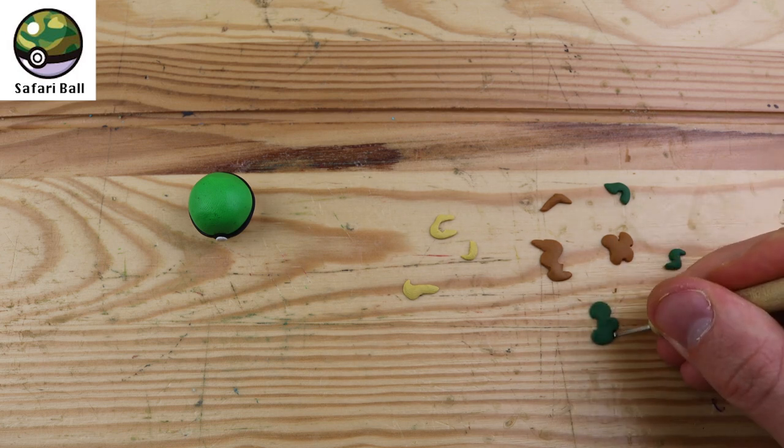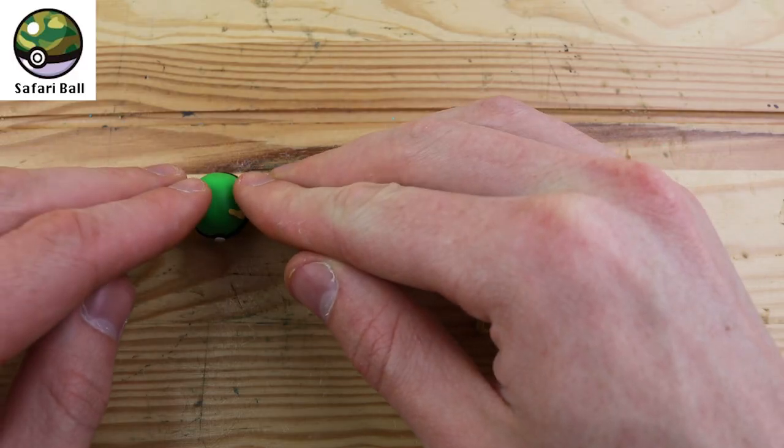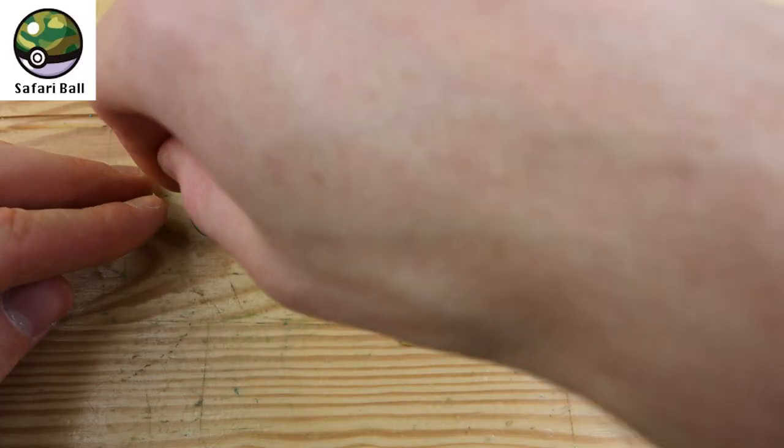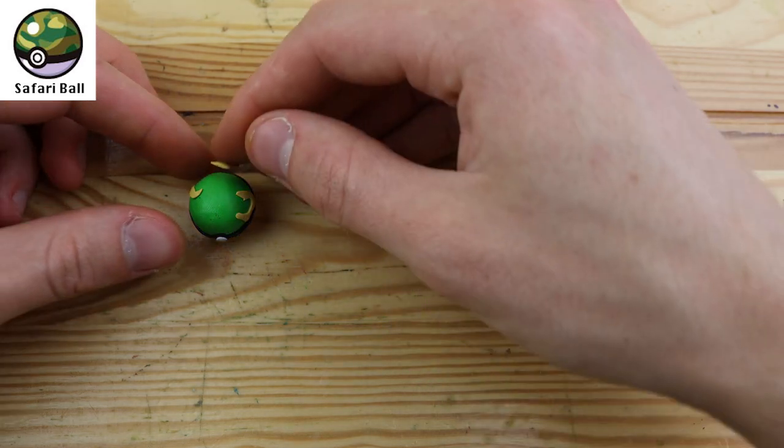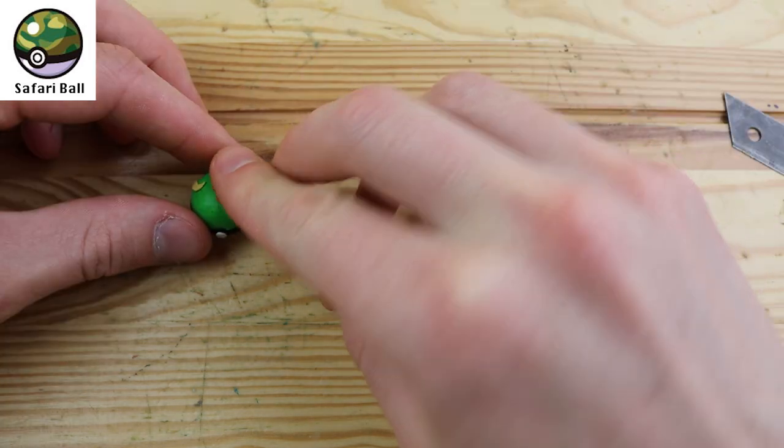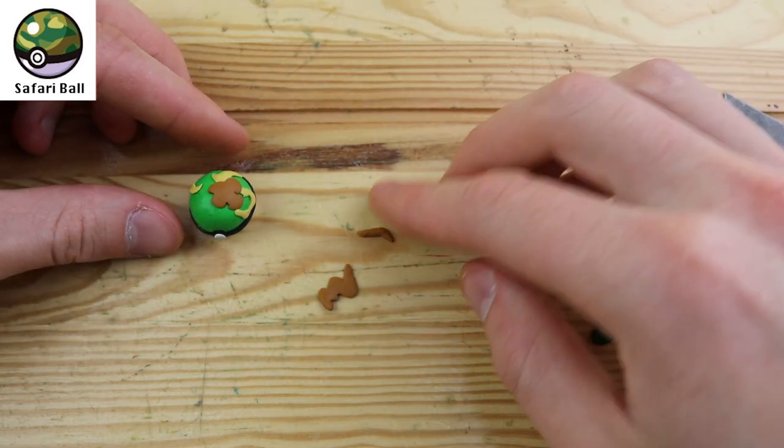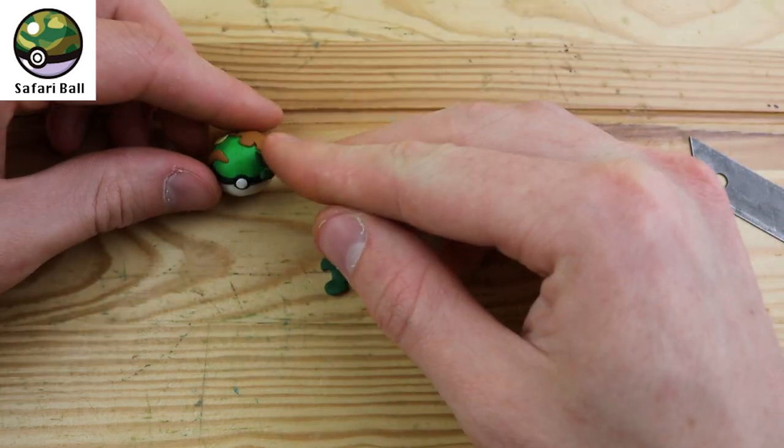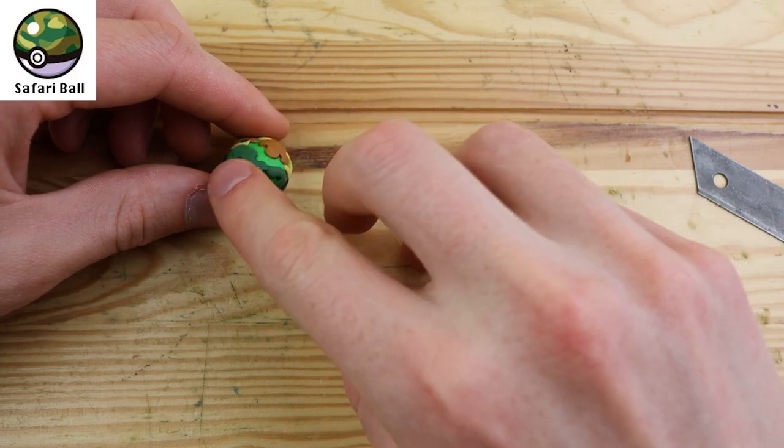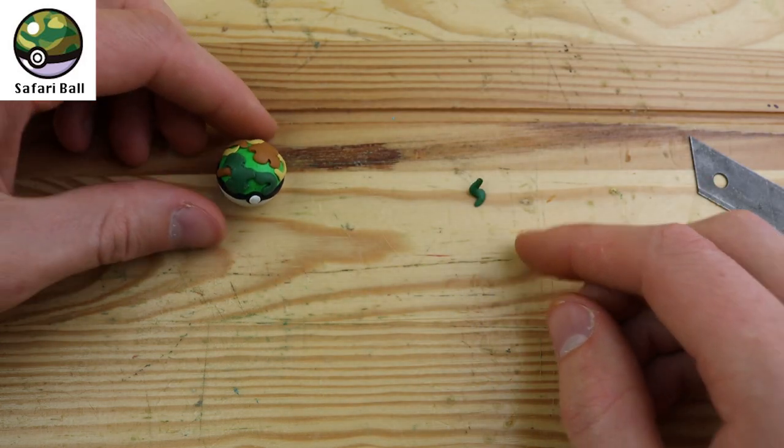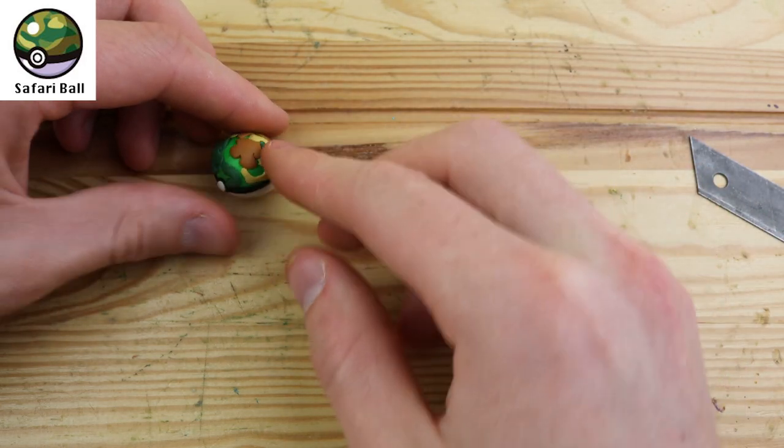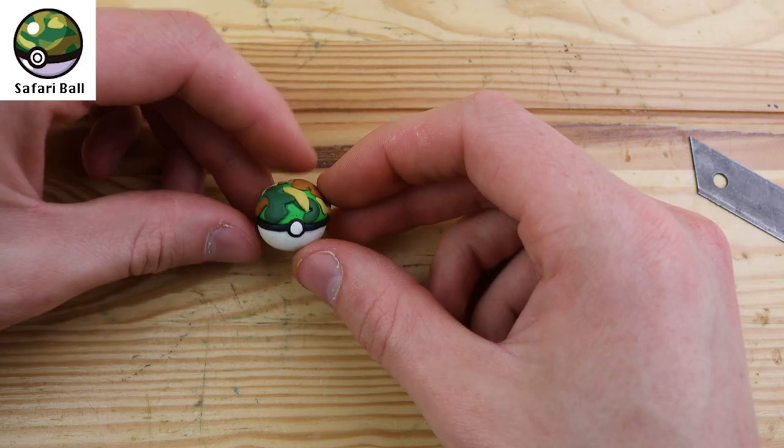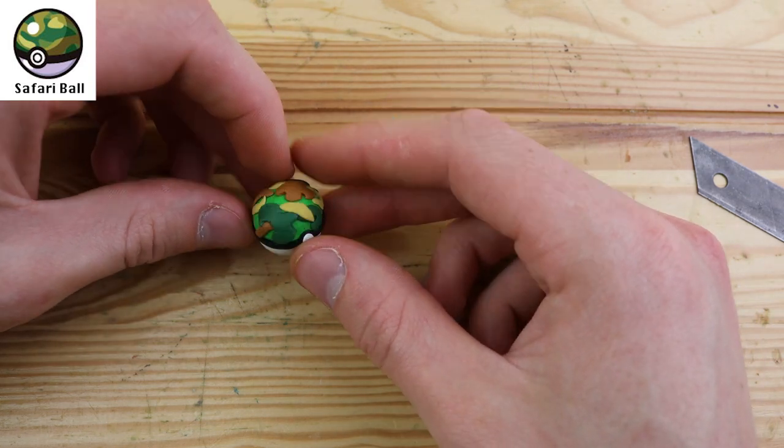And I know they'll be overlapping each other, and they won't really be flat on the ball, but I think this is really the best you can do if you're not going to paint it. The special thing about the safari ball is it can only be used to catch wild pokemon during a safari game. And I've just taken all these and randomly placed them all over it. I think we need a little bit more tan in the front. And that looks pretty good, so let's move on to our next pokeball.